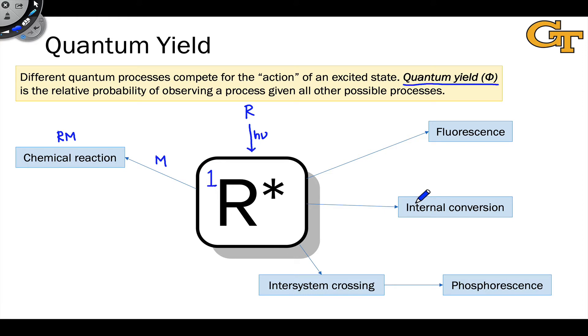Internal conversion to another singlet state, if we excited to let's say S2, S3 internal conversion back down to S1 or even S0 is an option, or S1 to S0 internal conversion is an option. Inter-system crossing from S to T from a singlet to a triplet is an option. All three of these are available to the excited state in contrast to chemical reaction, and each is associated with a certain probability.